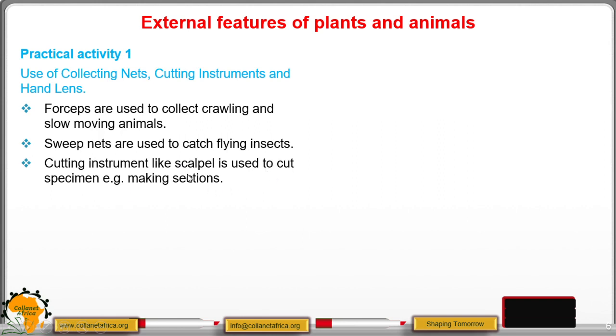Then cutting instruments like scalpel are used to cut specimen or making sections or dissect. So you cut small pieces. We are going to use these cutting instruments to cut, and then we have the hand lens or what we call the magnifying lens to enlarge small plants and animals.